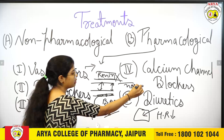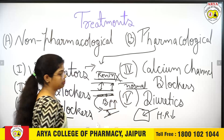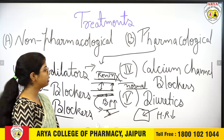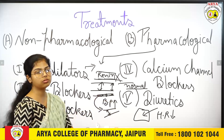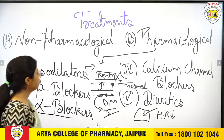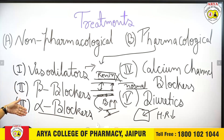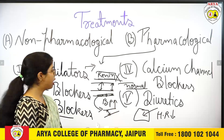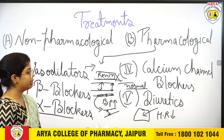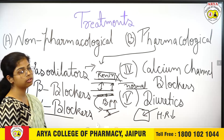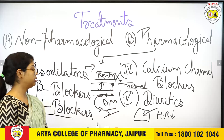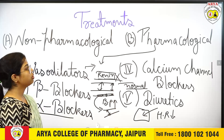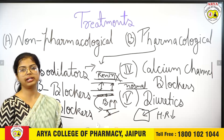So diuretics work on the kidney's renin-angiotensin system. Vasodilators, beta blockers, alpha blockers, calcium channel blockers, and diuretics — these five types of medicines are used in the pharmacological treatment of hypertension.